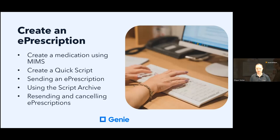There are a few steps to creating an e-prescription for a patient. Some of you may be prescribing in Genie or using the MIMS database for the first time. First I will show you how to use the MIMS database to create a prescription. We have a very useful tool called Quick Scripts which will save you time in creating any prescription in the future. We will then initiate the e-prescribing process, show you what an e-prescription looks like on the patient's mobile phone, and introduce you to the Script Archive and how you can resend and cancel e-prescriptions.